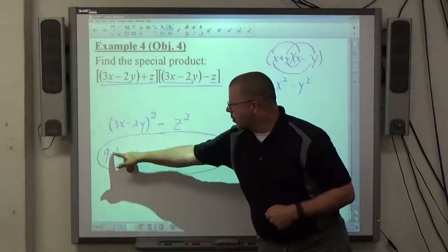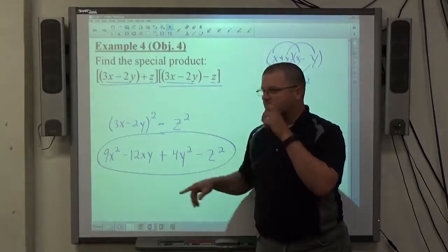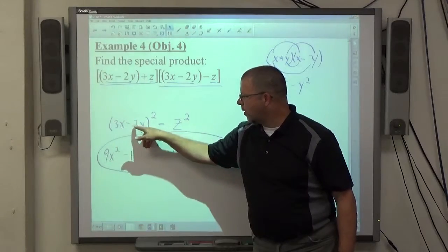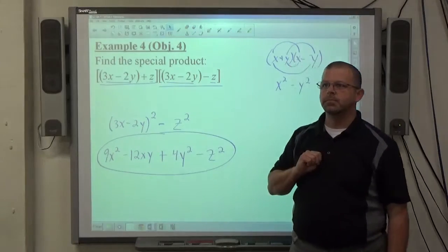A binomial to the second power: square first, double product, square second. The squares are always positive. The product is the only thing that could be negative. One negative makes a negative outcome.